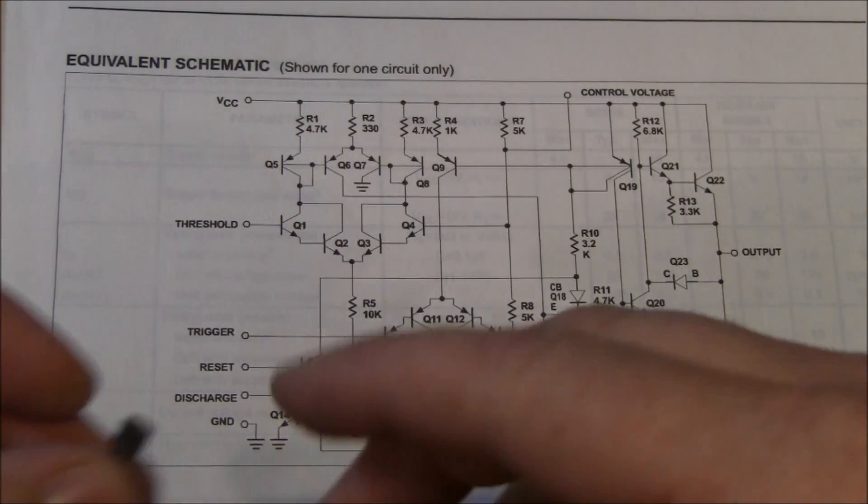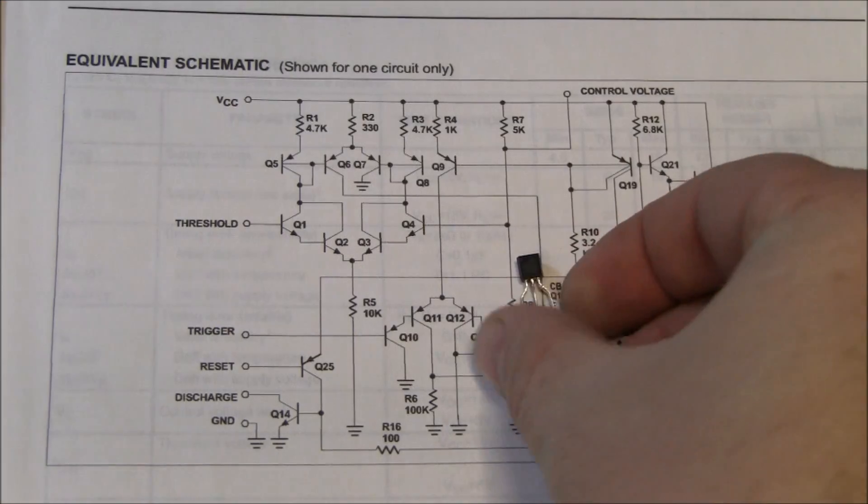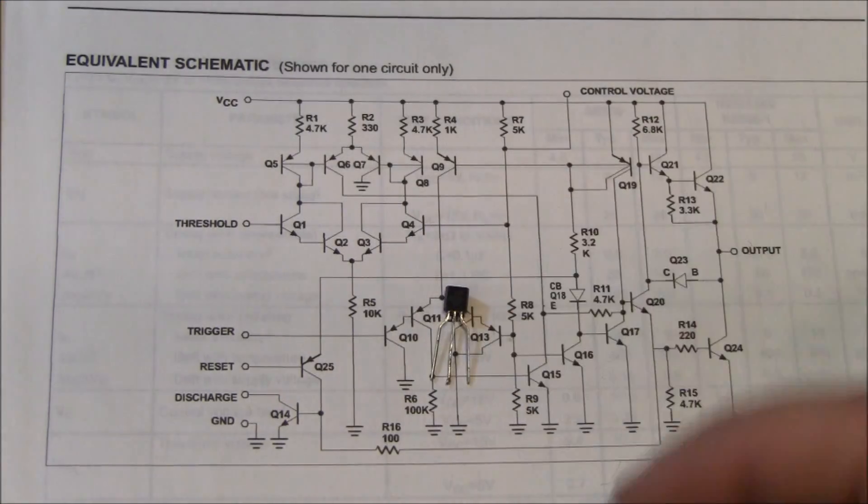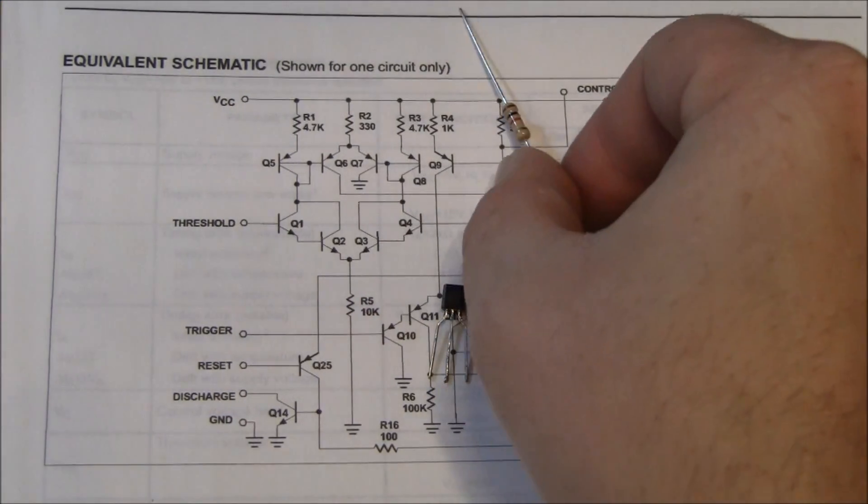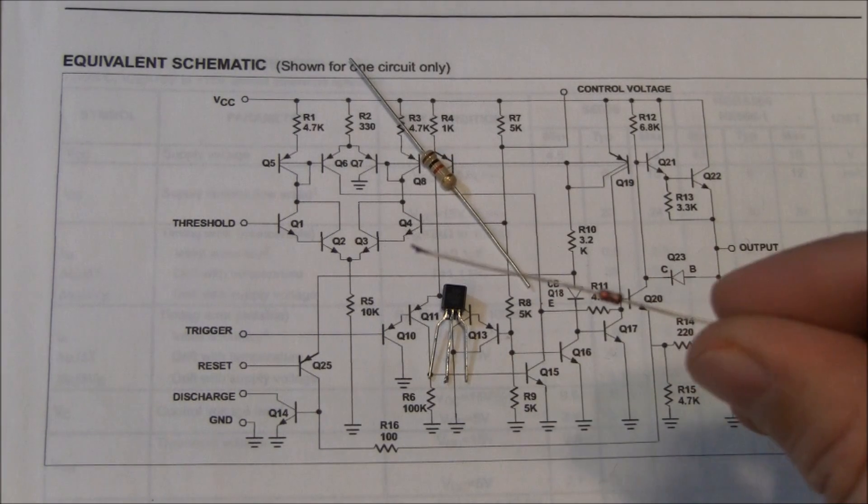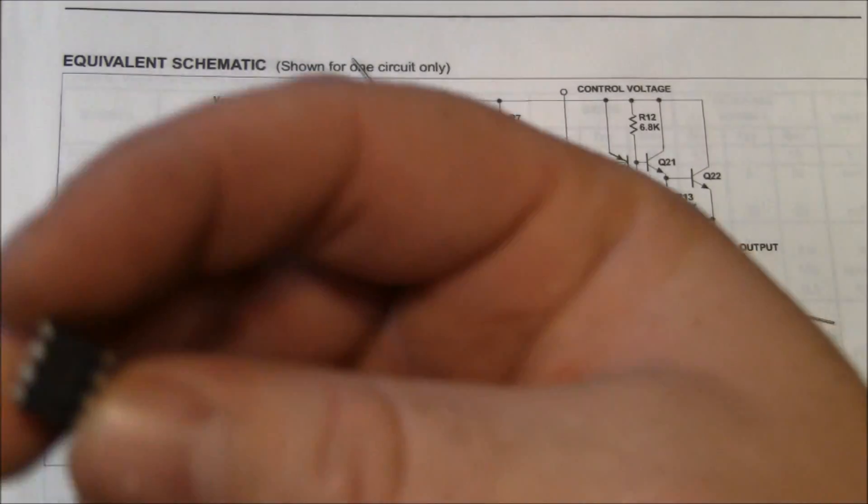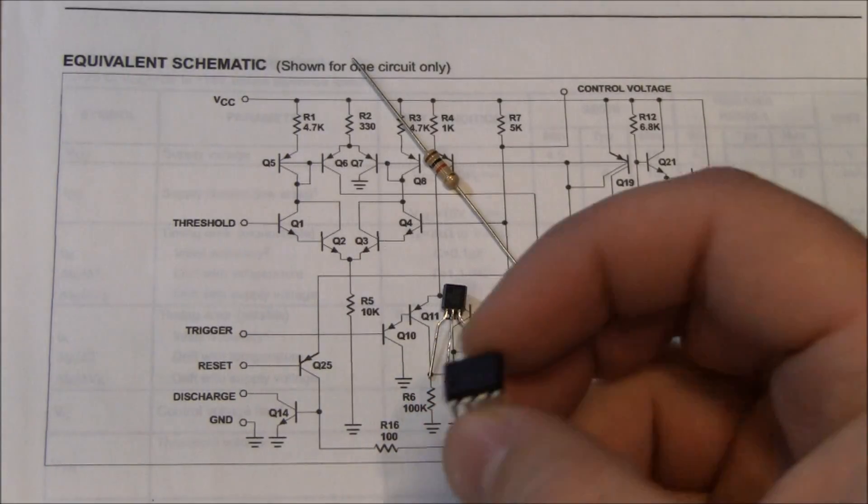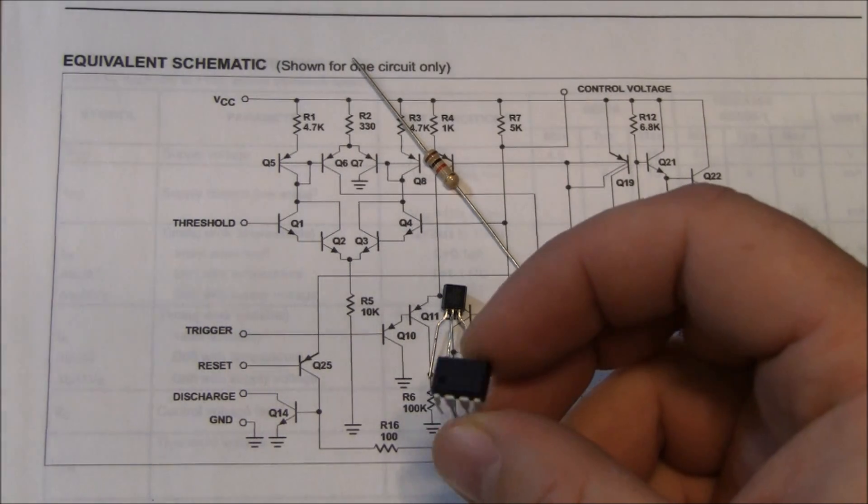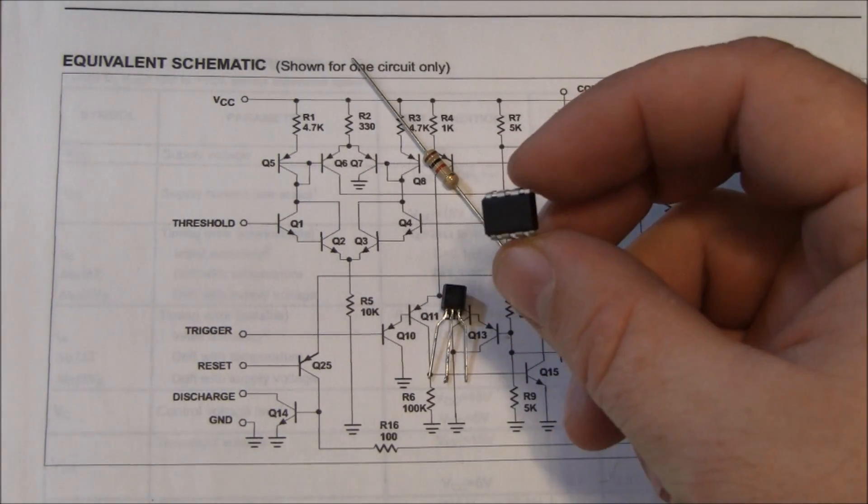Instead of having to build this circuit using transistors, resistors, and diodes, you can see that would take up a lot of space and probably cost you more than 50 cents just if you buy them in bulk. You buy them one at a time, it might be a dollar or two.